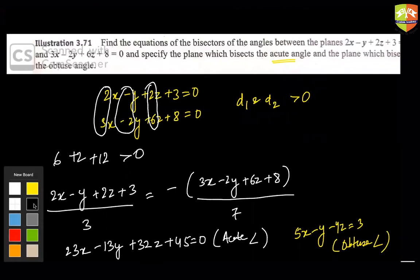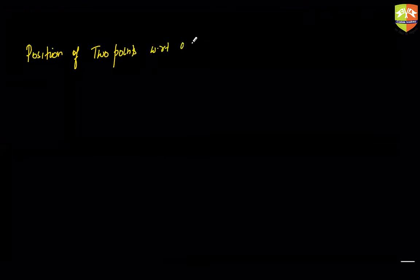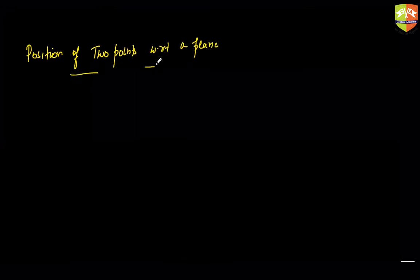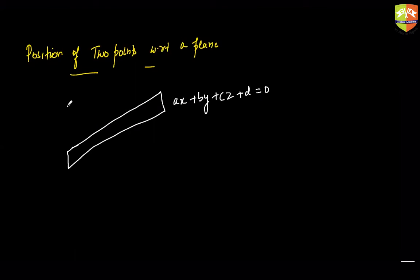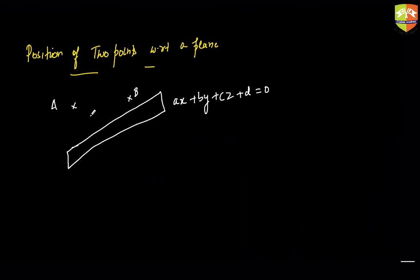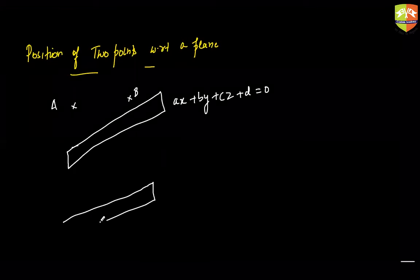One last concept remaining — I'll take that up quickly. Position of two points with respect to a plane; this will barely take 2–3 minutes. If you have been given a plane ax + by + cz + d = 0, how do I know whether two points A and B lie on the same side or on opposite sides of the plane?